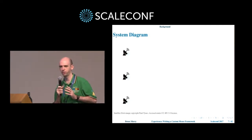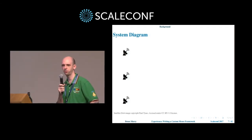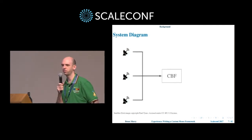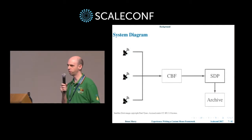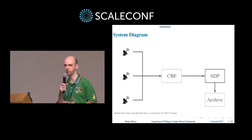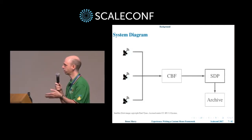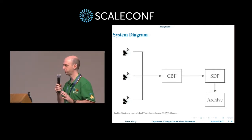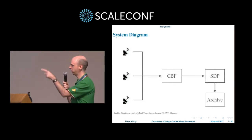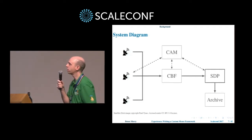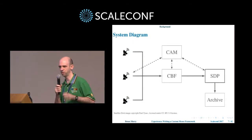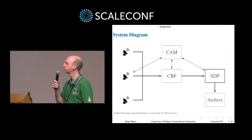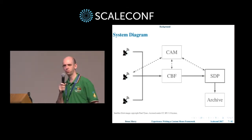So what does MeerKAT actually look like? We've got — it will be 64 dishes — which we have digitizers on. That digitizes some data, which comes into what we call a correlator beamformer, which does the very first level of data processing. That's a separate team. I work in the science data processor team. We do further data processing to turn it into useful scientific data that astronomers can actually work with, and that all goes into an archive. There's also a control and monitoring system that drives all these things — tells the telescopes where to point, switches things on and off, collects all the sensors, has alarms, and provides the user interface for operators.